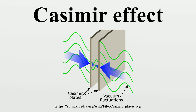Possible causes — Vacuum energy: The causes of the Casimir effect are described by quantum field theory, which states that all of the various fundamental fields, such as the electromagnetic field, must be quantized at each and every point in space. In a simplified view, a field in physics may be envisioned as if space were filled with interconnected vibrating balls and springs, and the strength of the field can be visualized as the displacement of a ball from its rest position. Vibrations in this field propagate and are governed by the appropriate wave equation for the particular field in question. The second quantization of quantum field theory requires that each such ball-spring combination be quantized — that is, that the strength of the field be quantized at each point in space. At the most basic level, the field at each point in space is a simple harmonic oscillator, and its quantization places a quantum harmonic oscillator at each point.